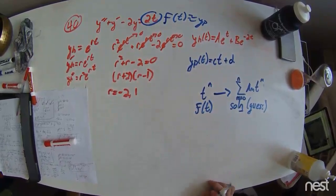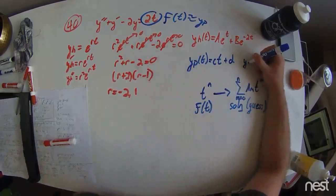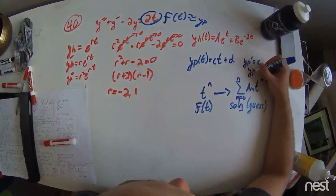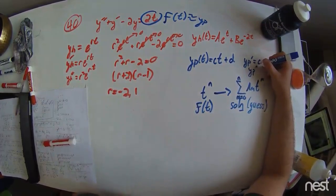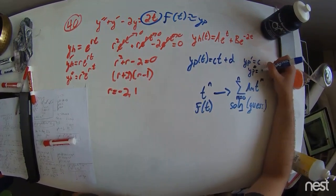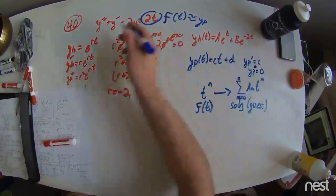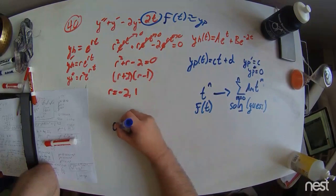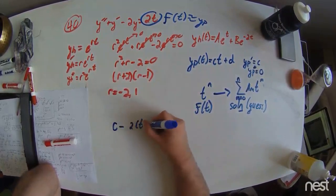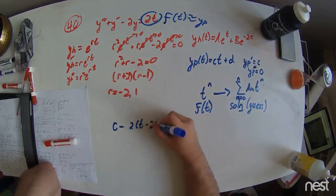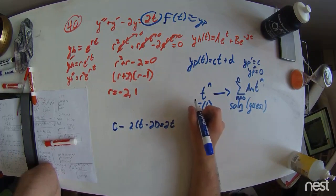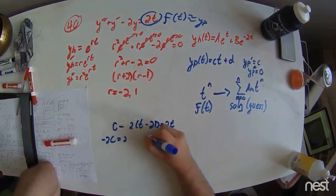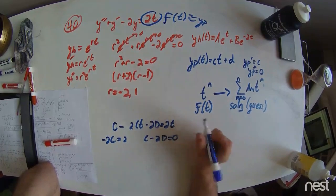Taking the derivative of this function yields y prime particular equal to c and y double prime particular equal to 0. Plugged in through the expression above and we were solved for c and d, we can find that c minus 2ct minus 2d equals 2t. We therefore have minus 2c equals 2, and c minus 2d equals 0.